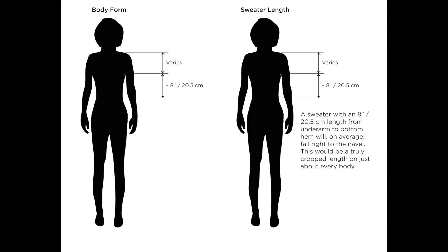The first example is what I consider a cropped version. Anything between eight and nine inches or so from the underarm to the bottom hem would be considered cropped — that's 20 and a half to 23 centimeters. This length means the garment will sit right around your navel or maybe just below, depending on the length of your body. It will most likely be above the waistband of a mid to high rise waist pant, and the amount of ease in the garment will also affect how it wears.